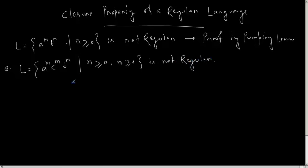There are two ways to solve this problem. Either we can apply the pumping lemma directly — assume a sufficiently long string, assume the language is regular and accepted by a finite automaton, and check whether for a given value of i there exists a string which does not satisfy the pumping property. Another way is to exploit the closure property of a regular language.